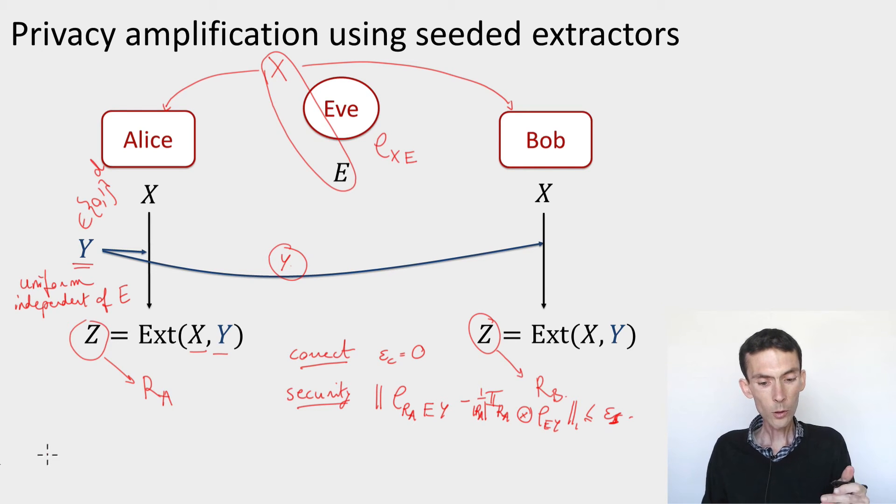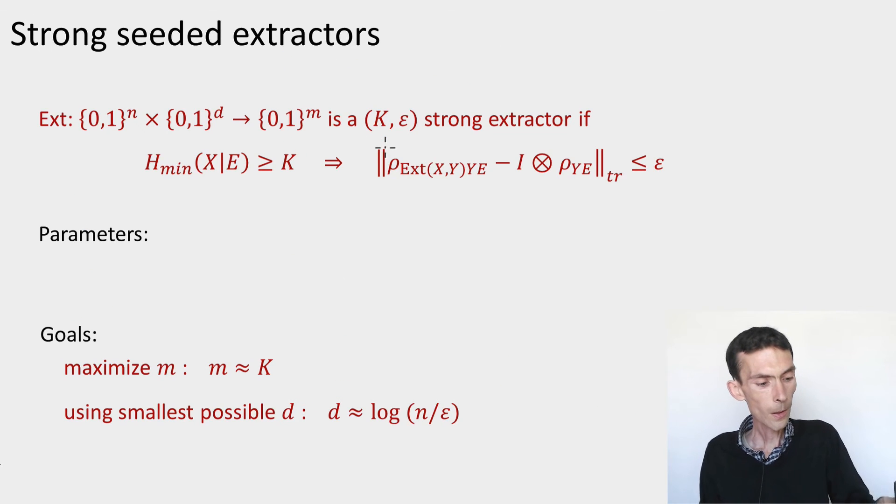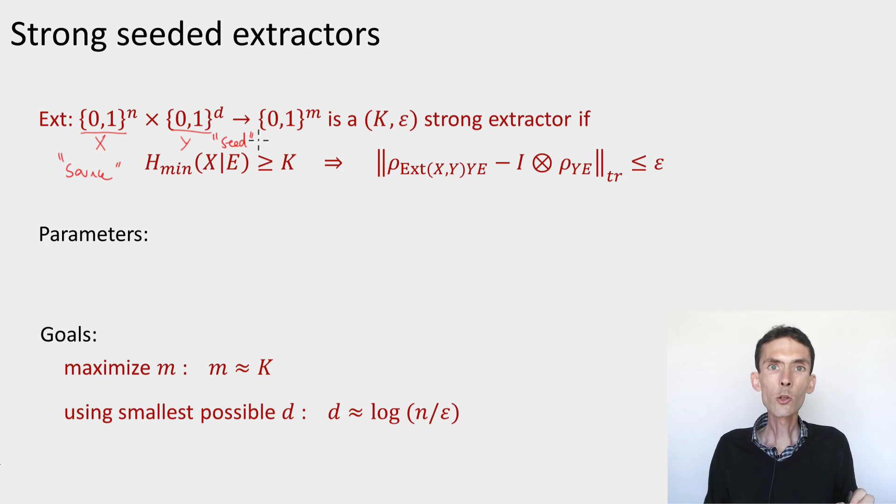So before ending, let me give you a little bit formally what is the definition of a strong seeded extractor. So here we are. That's the formal definition. We have two inputs here, X and Y. X is called the source, Y is called the seed. So for the application to privacy amplification, X is the weak secret and Y is the seed, the randomness that Alice generated locally.